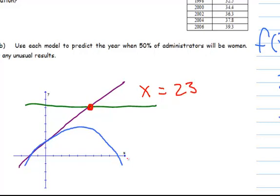That point right there. And we got x equals 23. And that means that 23 years after 1990, we'll have 50% administrators if we use the linear model. So you have to take your 1990, you have to add your 23 to it, and that gives you the year 2013.